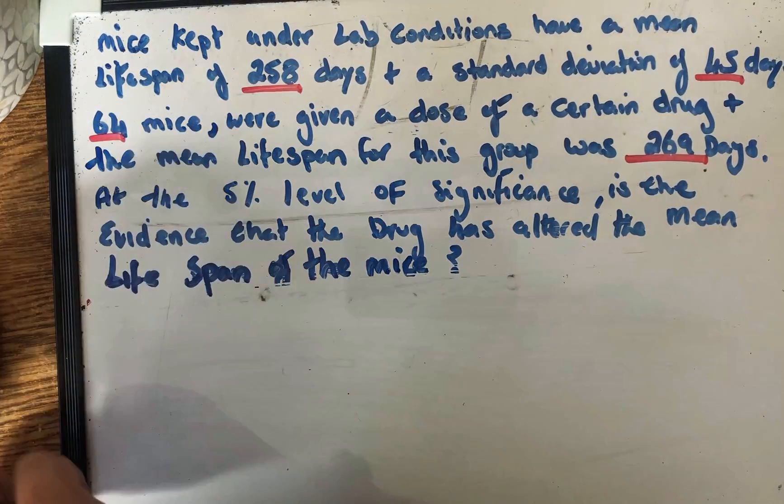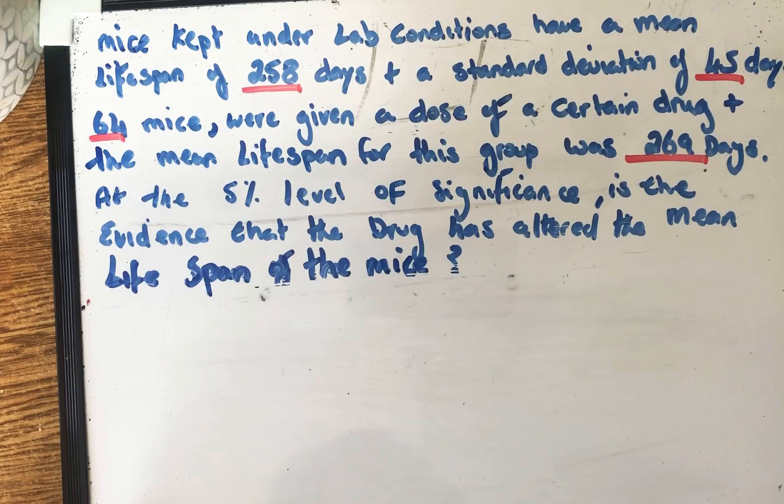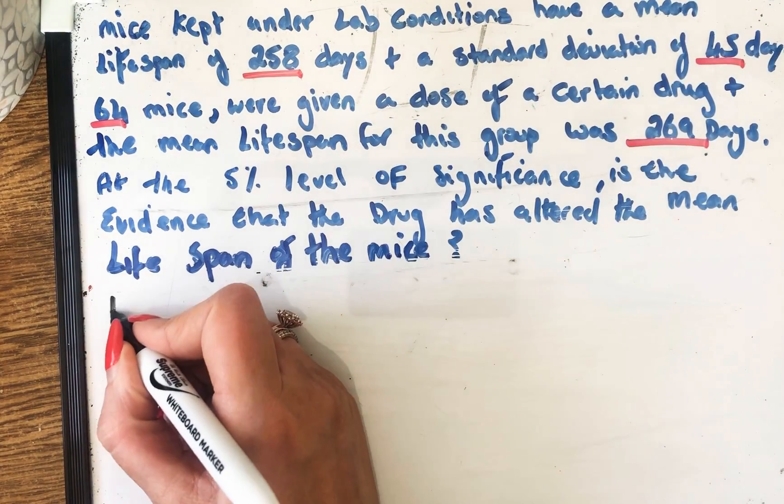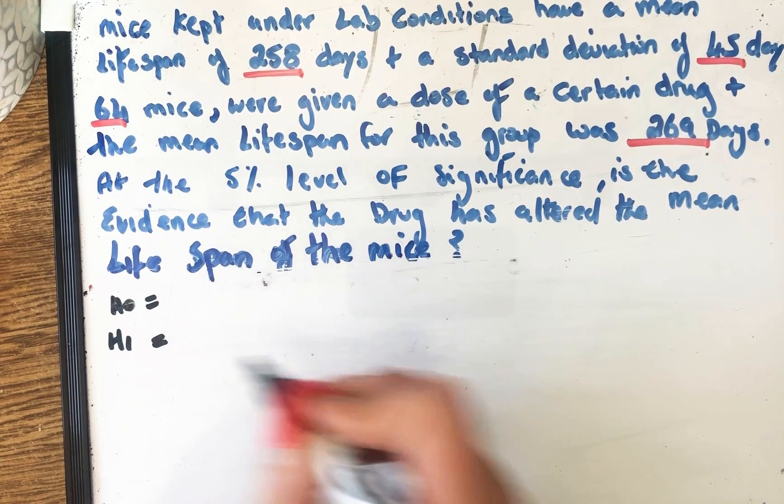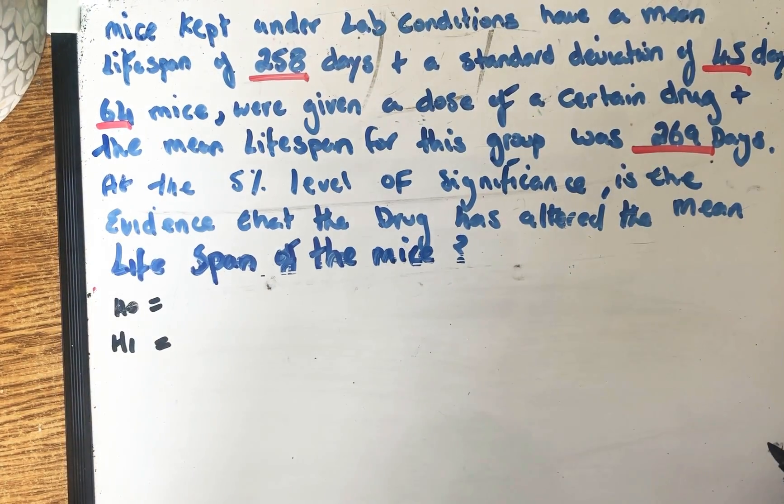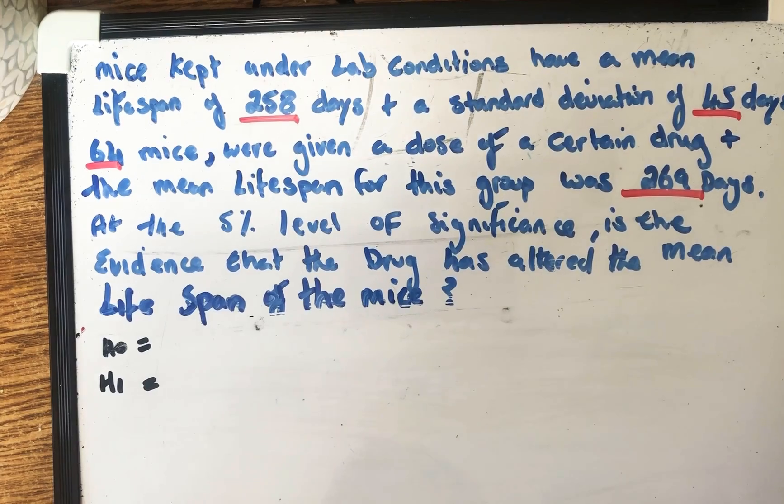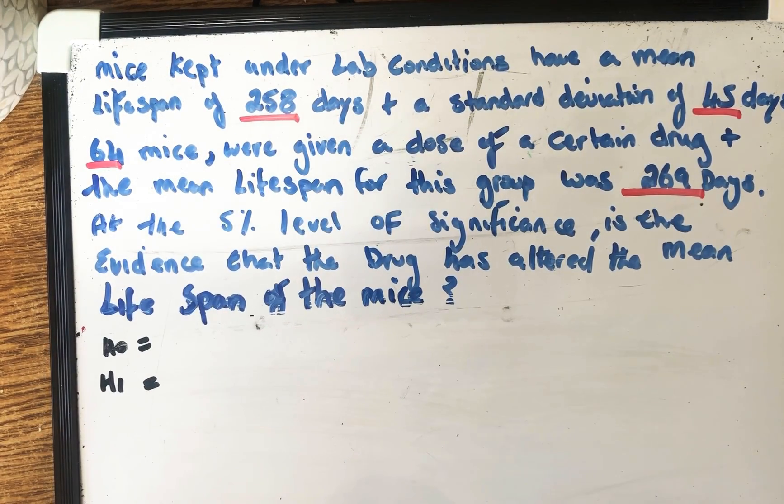So let's begin this question by writing down what is our H0 and our H1. So our H0 is the null hypothesis. So we start off and we say, well, what was the original lifespan of these mice? That will be our null.